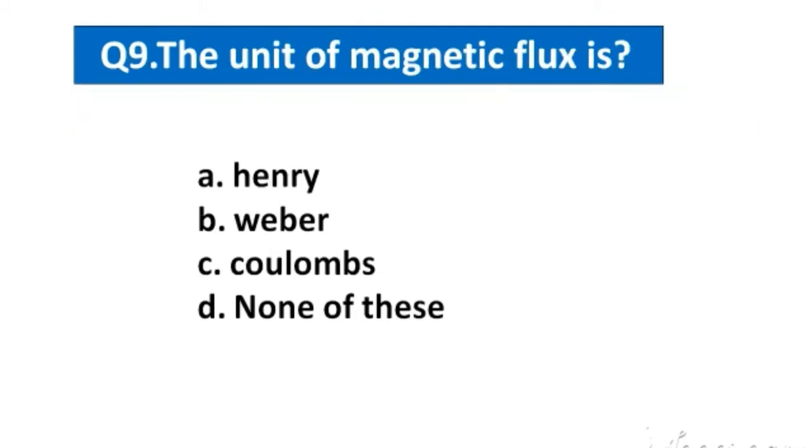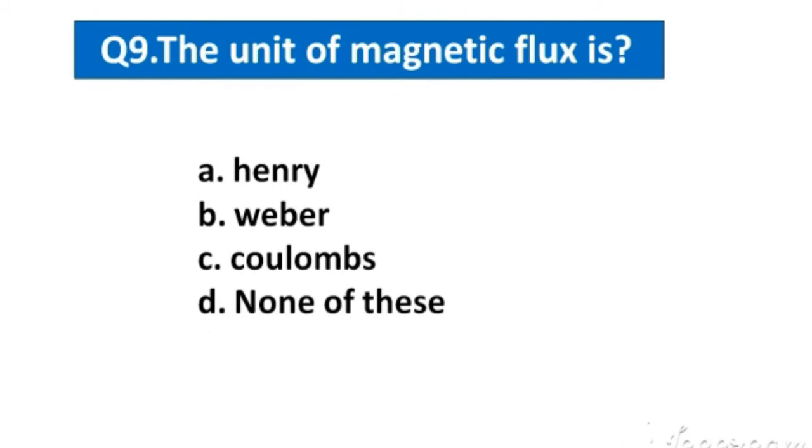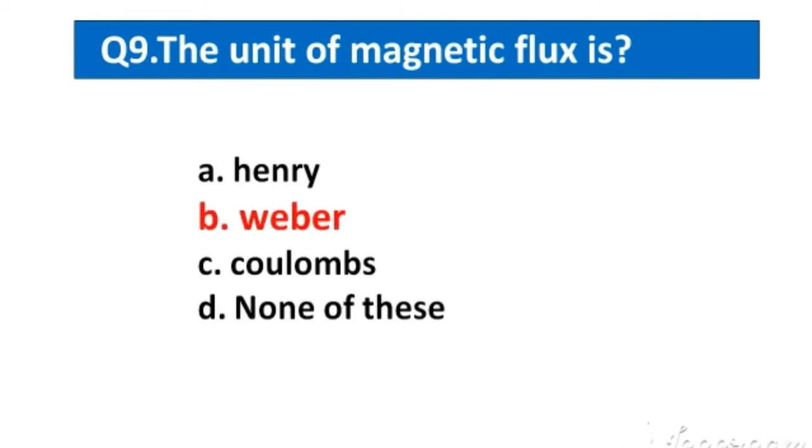Question number 9. The unit of magnetic flux is. Option A. Henry, B. Weber, C. Coulombs, D. None of these. The right answer option B. Weber.